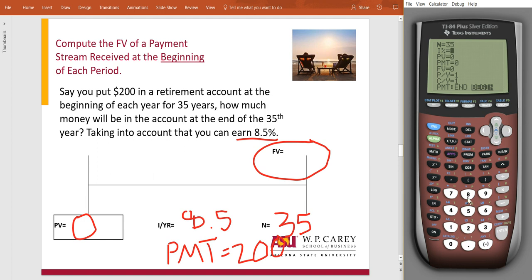Our interest rate, 8.5%. Our present value, we haven't put anything in there as of late. Our payment is $200. And we want to know what the future value of those payments is going to be.